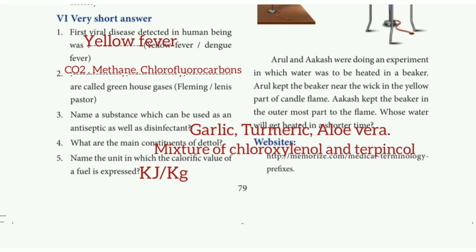Very short answer. First one: the first viral disease detected in human beings was yellow fever. Second one: greenhouse gases are CO2, methane, and chlorofluorocarbons. Third one: name a substance which can be used as an antiseptic as well as a disinfectant. The answer is garlic, turmeric, and aloe vera.